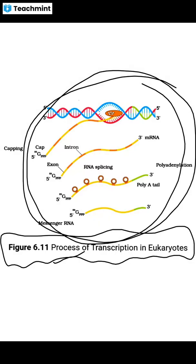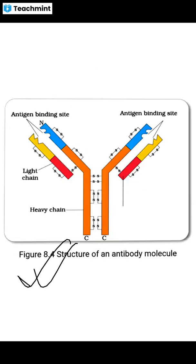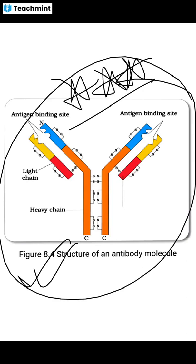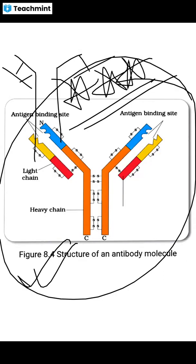Next, from human health and disease, a very very important diagram is the antibody molecular structure. You need to locate the light chains, the heavy chains, and show the disulfide bonds. It is very easy: two heavy chains, two light chains, joined by disulfide bonds. That's it — this is the diagram of the antibody from Chapter 8.